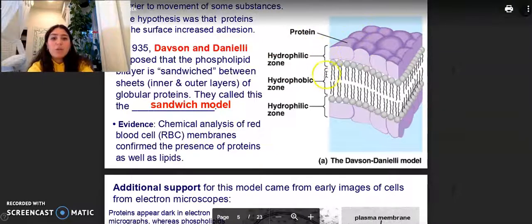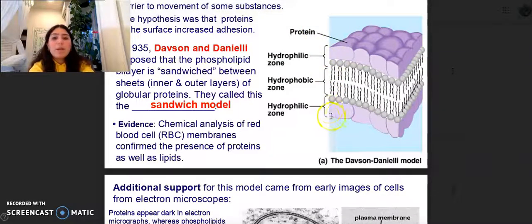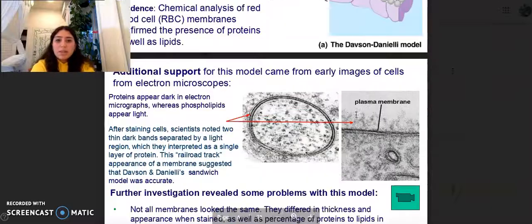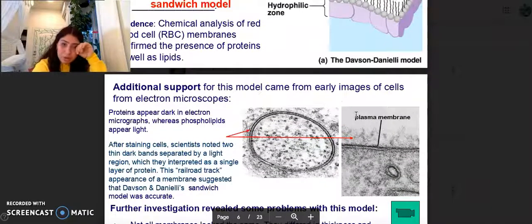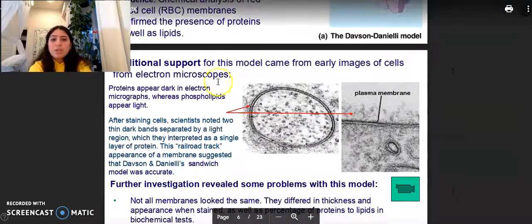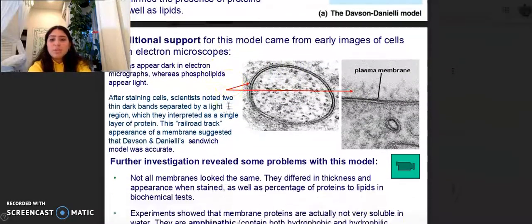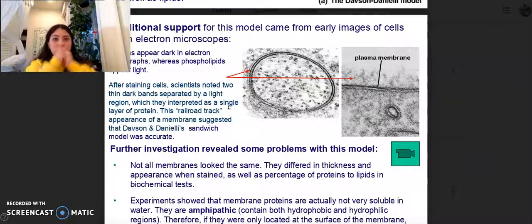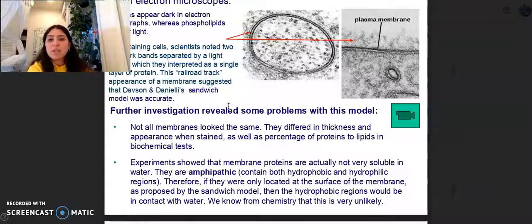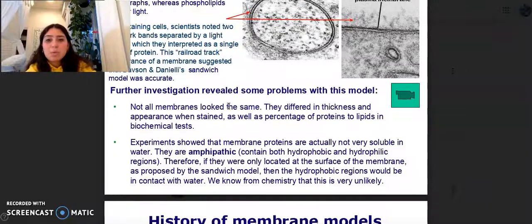Here's the protein, the hydrophobic zone, the hydrophilic zone, and then the hydrophilic zone again. The evidence is that chemical analysis of red blood cell membranes confirmed the presence of proteins as well as lipids. Additional support for this model came from early images of cells from electron micrographs. Proteins appear dark in electron micrographs while phospholipids appear light. After staining the cells, scientists noticed two thin dark bands separated by a light region, which they interpreted as a single layer of protein.